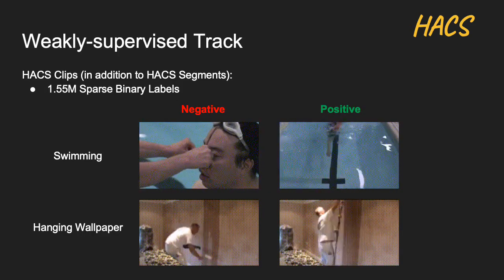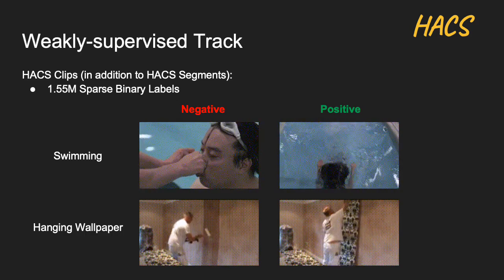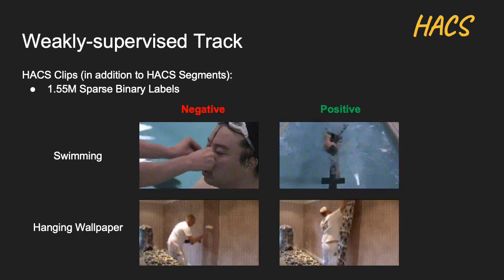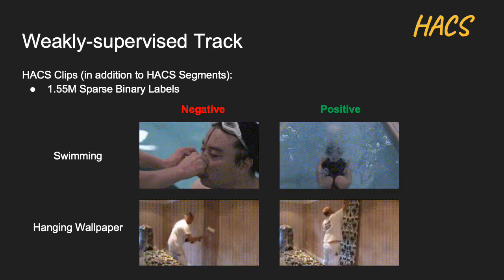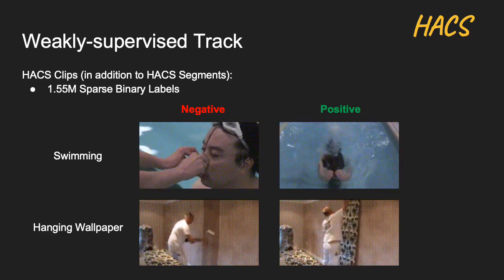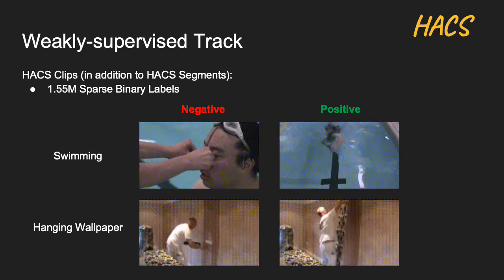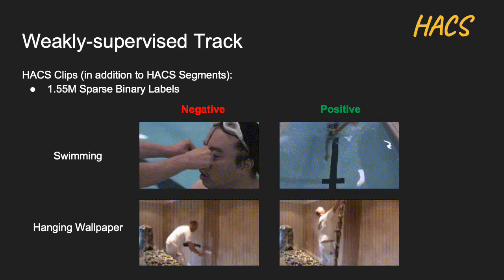The second track is called the Weakly Supervised Learning Track. Participants are not only allowed to use HACS Segments with fine labels, but also HACS Clips, which contains a larger amount of data with short video clips and binary labels.